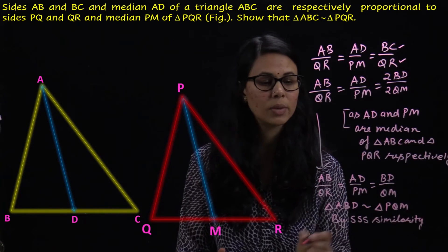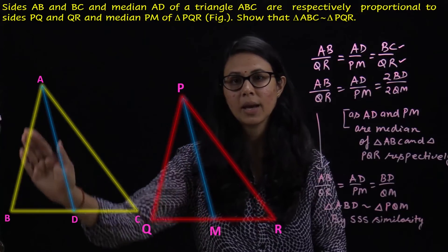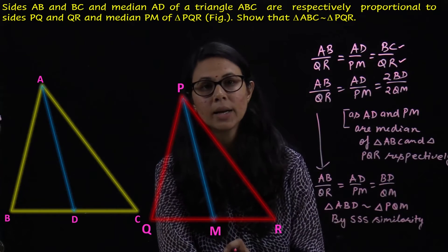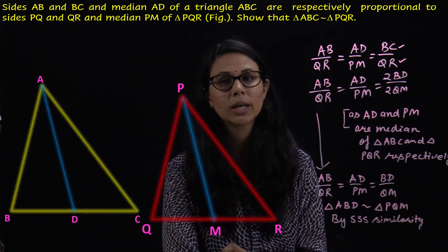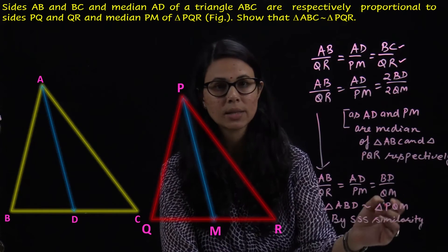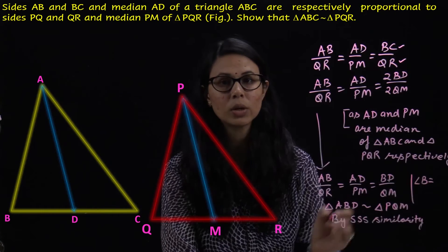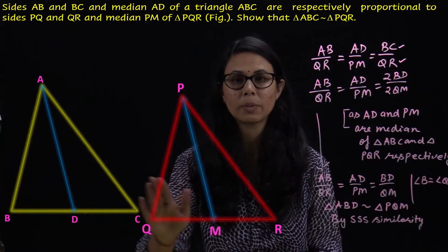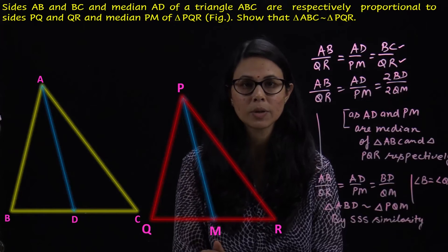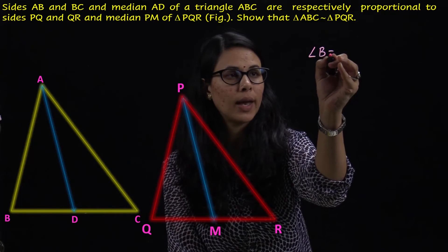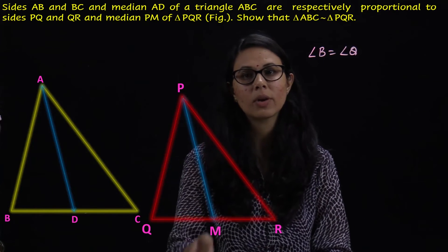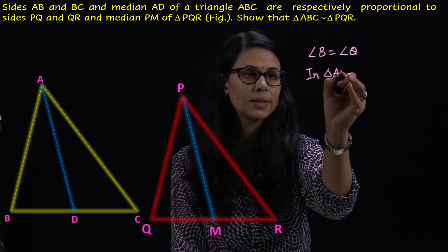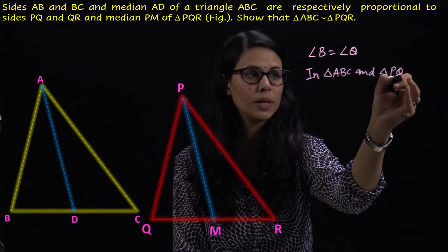By SSS similarity, both triangles ABD and PQM are similar. Now if these two triangles are similar, then the corresponding angles are equal. So we can say that angle B is equal to angle Q, because these two triangles are similar and their corresponding angles are equal. Now in triangle ABC and triangle PQR, angle B is equal to angle Q.